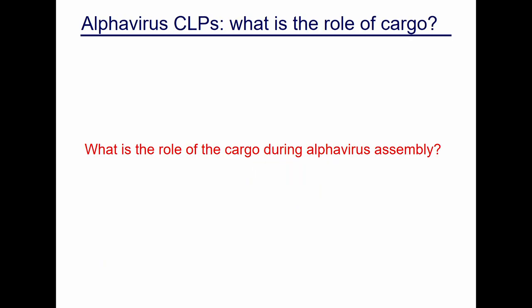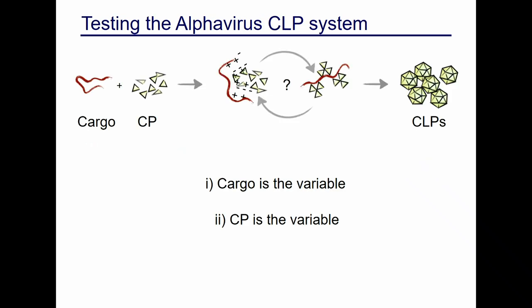Our big question is: what is the role of cargo during alphavirus assembly? It doesn't have to be specific, but without it you don't form CLPs. If it doesn't have to be specific, yet the core also has to interact with glycoproteins, what exactly is the cargo doing? We're going to address this by varying cargo — looking at different-length single-stranded DNA oligos — and also by modifying basic residues on the capsid protein.